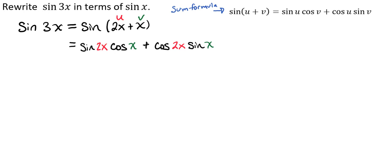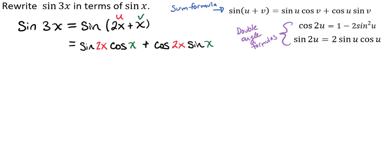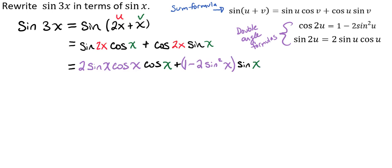Now we see that we have the sine of 2x and the cosine of 2x, which allows us to use our double angle formulas. So we can go ahead and plug those in, which gives us 2 times the sine of x times cosine of x times cosine of x, plus the quantity 1 minus 2 sine squared of x, times the sine of x.